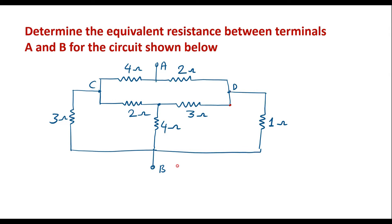In this video, let me consider one numerical to find equivalent resistance. Determine the equivalent resistance between terminals A and B for the circuit shown below. This is the given circuit. We are supposed to find the equivalent resistance between terminal A and terminal B.